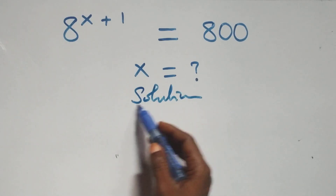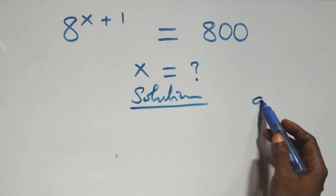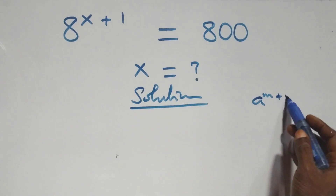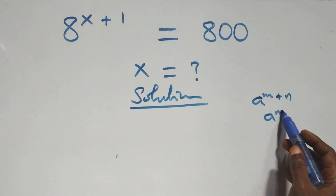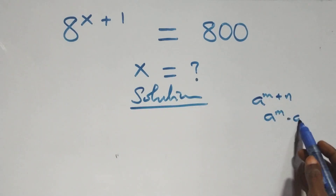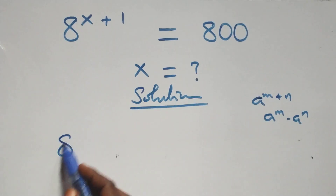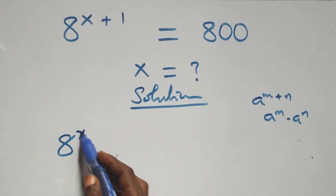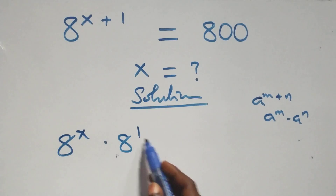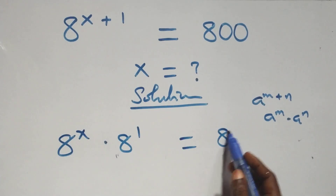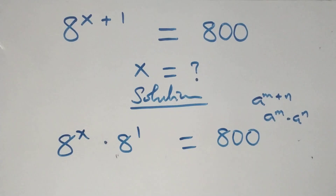What we have here follows when we have a raised to power n plus n — this is the same thing as a raised to power n times a raised to power n. So this becomes 8 raised to power x times 8 raised to power 1, equals 800 on this side.